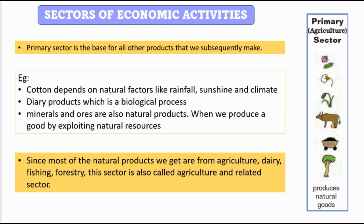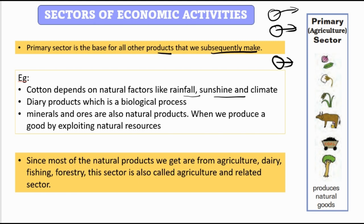There are three sectors: primary, secondary, and tertiary. Primary is the base for all products that we subsequently make. From plants we make food, from cotton we make clothes, from mines we get minerals. These are all primary products — the base required for further processing.